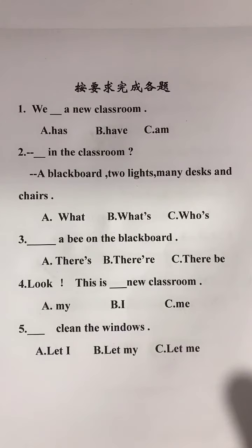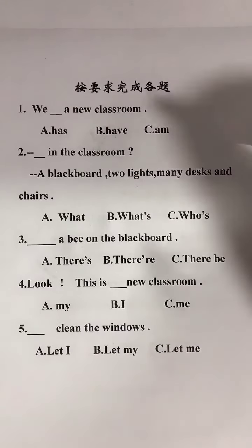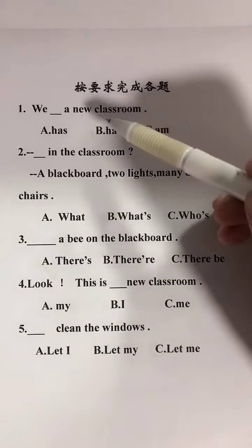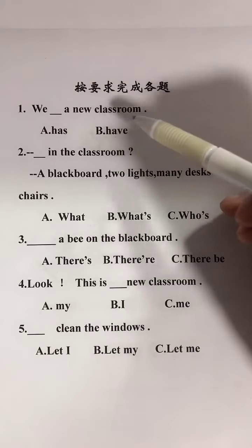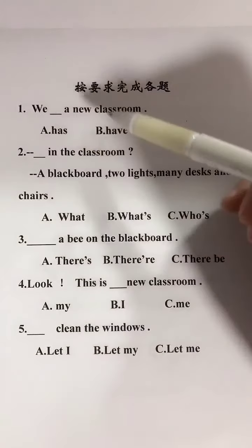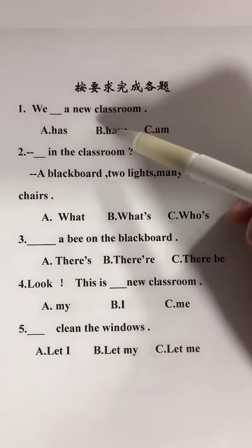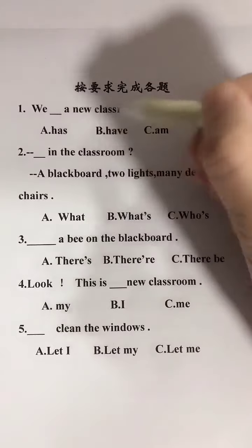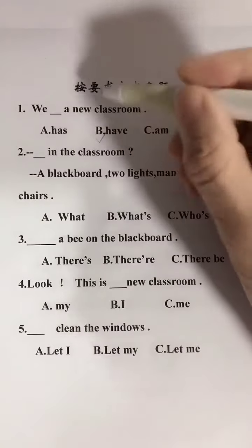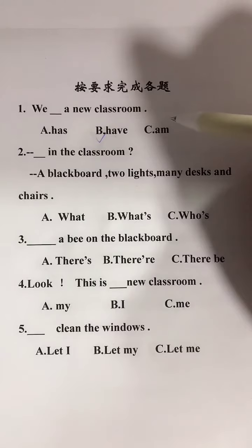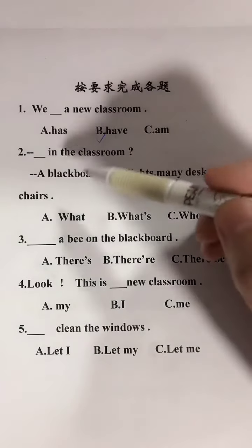每天我到题，按要求完成个题。第一题：We __ a new classroom。这是一个一般现在式的句子，主语we为复数，复数表示'有'要用have，选择be。答案：We have a new classroom，意思是我们有一间新的教室。